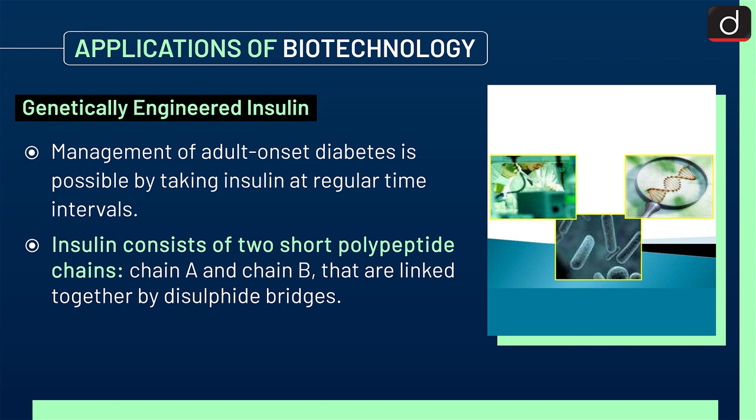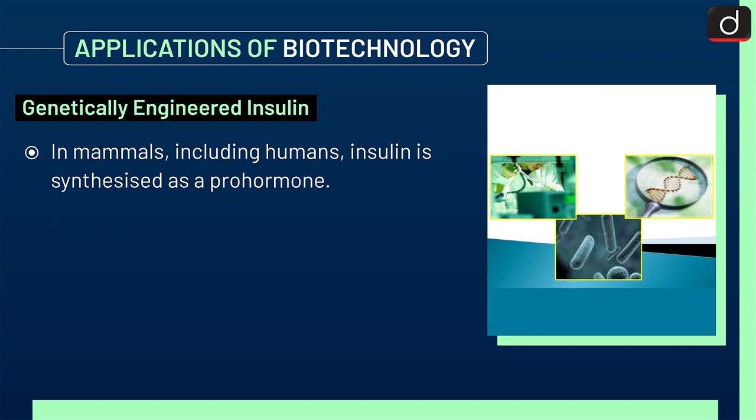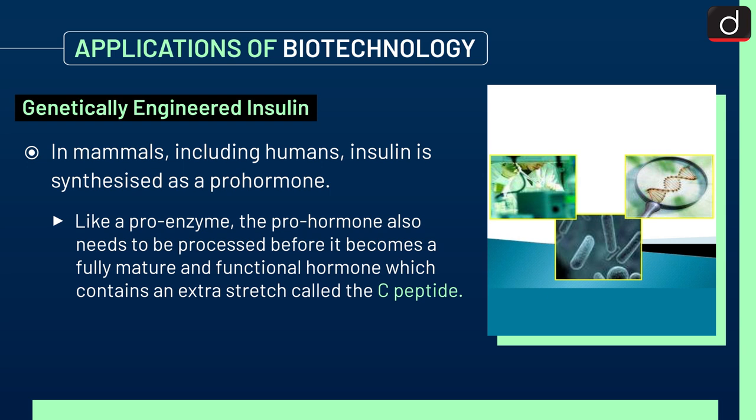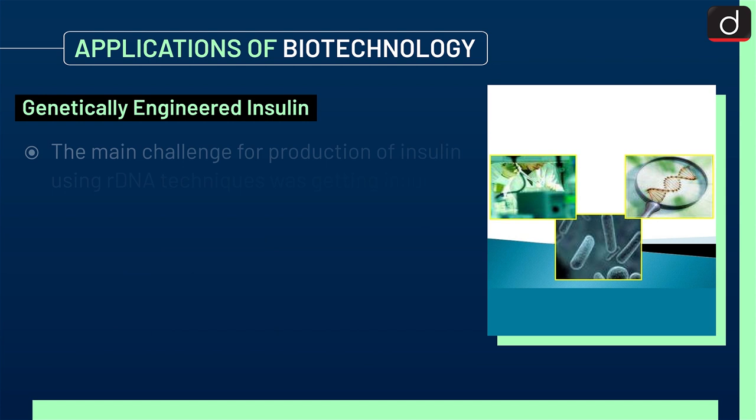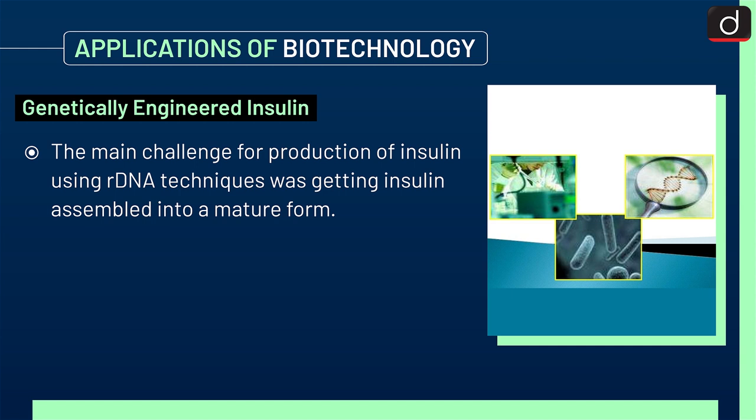In mammals including humans, insulin is synthesized as a pro-hormone. Like a pro-enzyme, the pro-hormone also needs to be processed before it becomes a fully mature and functional hormone. It contains an extra stretch called the C-peptide. The C-peptide is not present in the mature insulin and is removed during maturation into insulin. The main challenge for production of insulin using rDNA techniques was getting insulin assembled into a mature form.